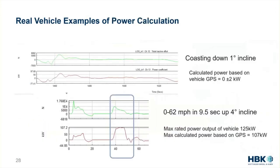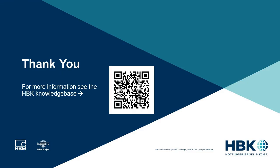As an example done with standard vehicle GPS data — lower-grade data than a higher-end GPS — coasting down a 1% incline on a 125-kilowatt system, they were off by plus or minus 2 kilowatts. So actually very accurate results coming from not-so-great sensors. They also ran a similar test: 0 to 62 miles per hour in 9.5 seconds up an incline, looking at force and power usage. Bringing in more accurate GPSs can increase this accuracy significantly.